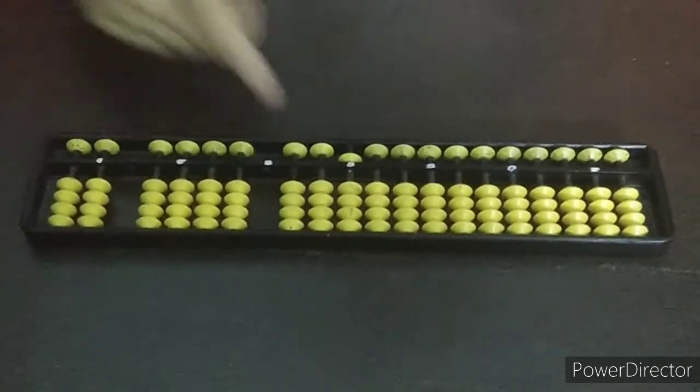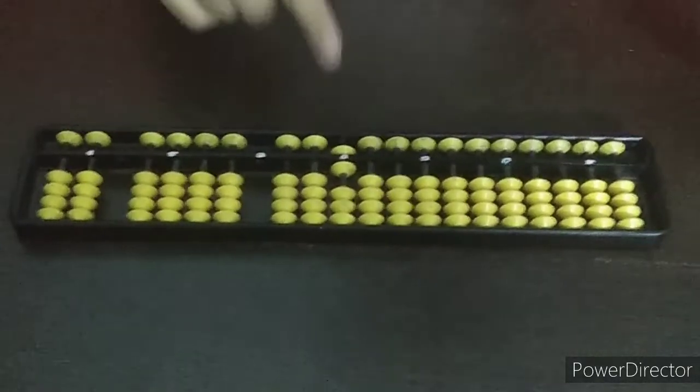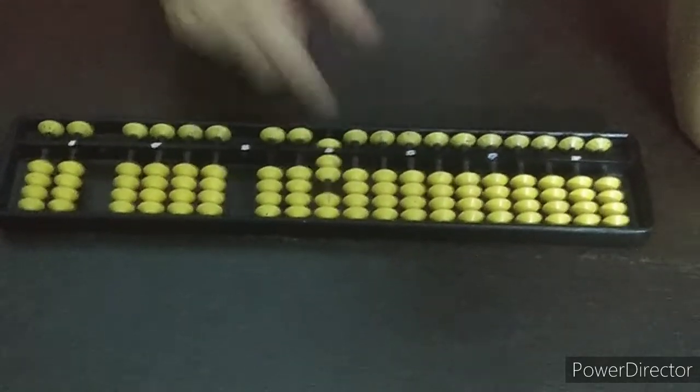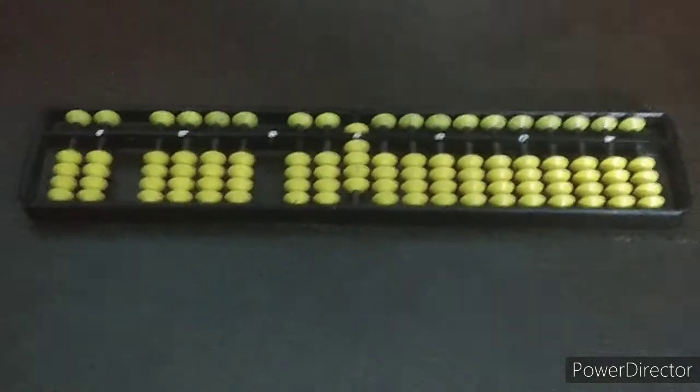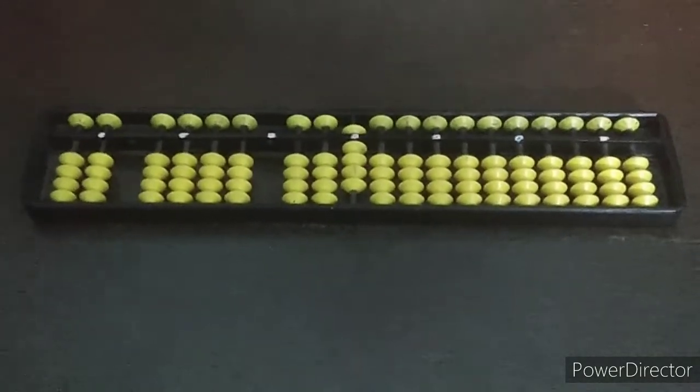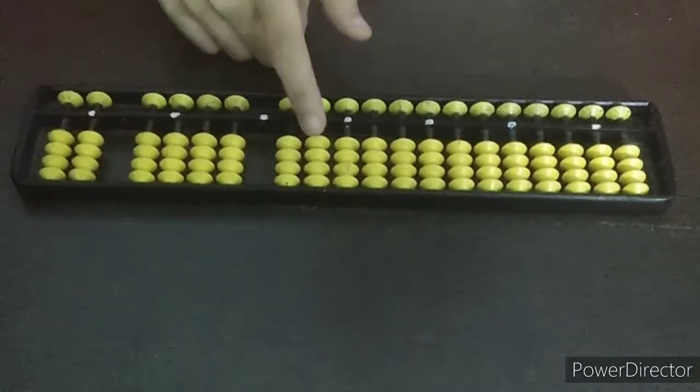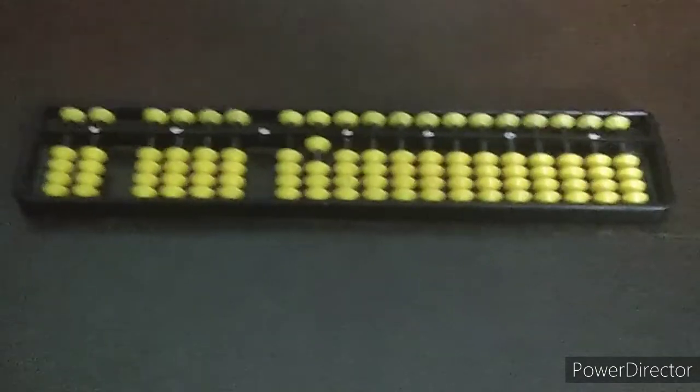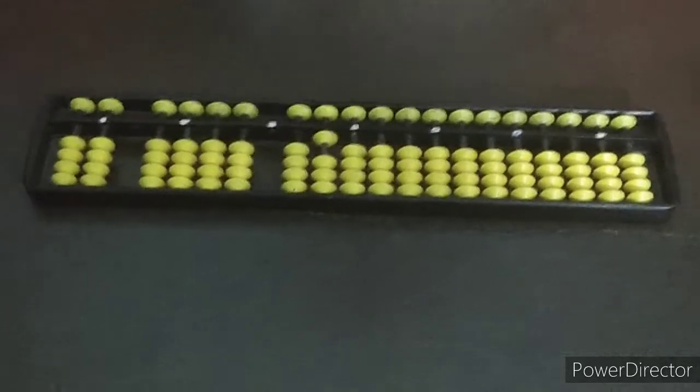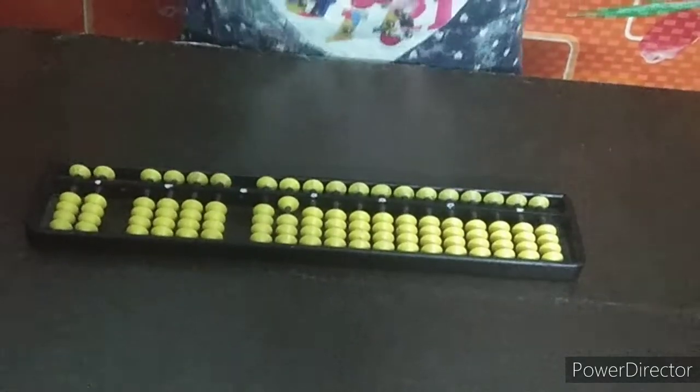Now 6, plus 1 is 6, then 7, 8, and 9. Then 10. Where to do 10? So we just pull out the 9 and on the left hand side, we push up one beat. This is 1 and 0, which is 10. Now 11, 1 and 1 equals 11.